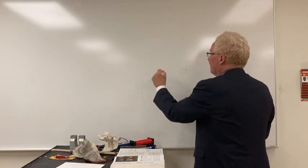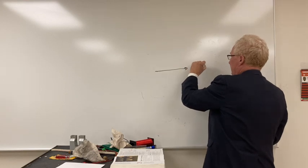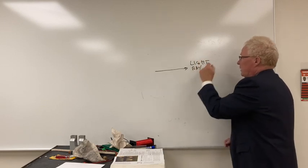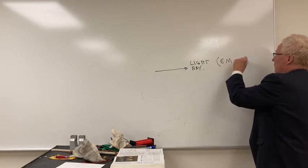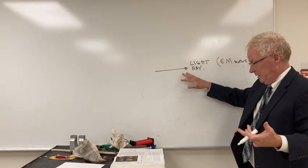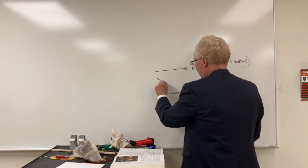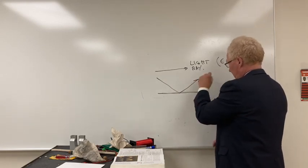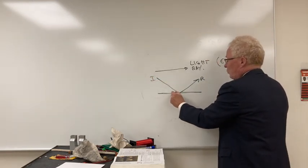We take light to travel as what we call a ray. In Chapter 22, we talked about light being an electromagnetic wave — an E and M wave. But now we're modeling this as a ray model of light. For example, if we have a surface and a light bounces on it and reflects off — this is reflection — incident and reflected, which is perfect for a smooth surface.